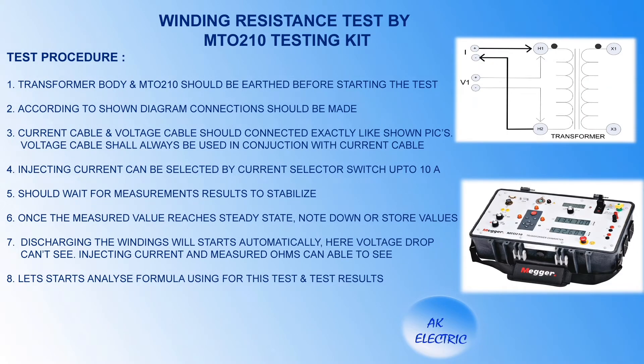Winding resistance test by MTO210 testing kit — test procedure: transformer body and MTO210 should be earthed before starting the test. Connections should be made according to shown pictures. Current cable and voltage cable should be connected exactly as shown. Voltage cable must always be used in conjunction with the current cable. Injecting current can be selected by current selector switch up to 10A. Wait for measurement results to stabilize. Once the measured value reaches steady-state, note down or store the values. Discharging of windings will start automatically. Here voltage drop cannot be seen directly — only injecting current and measured ohms are displayed.